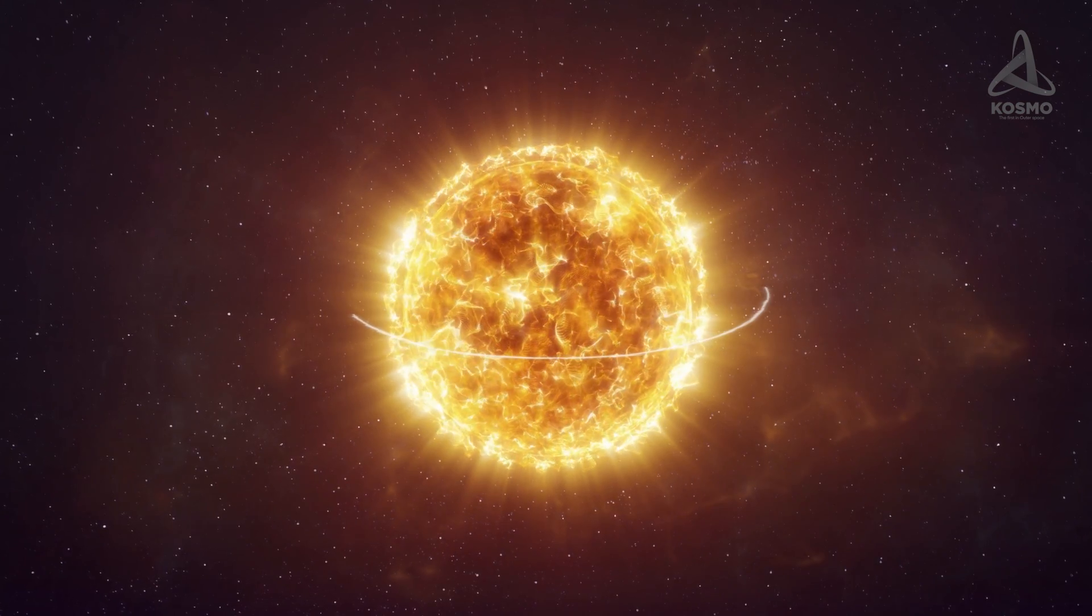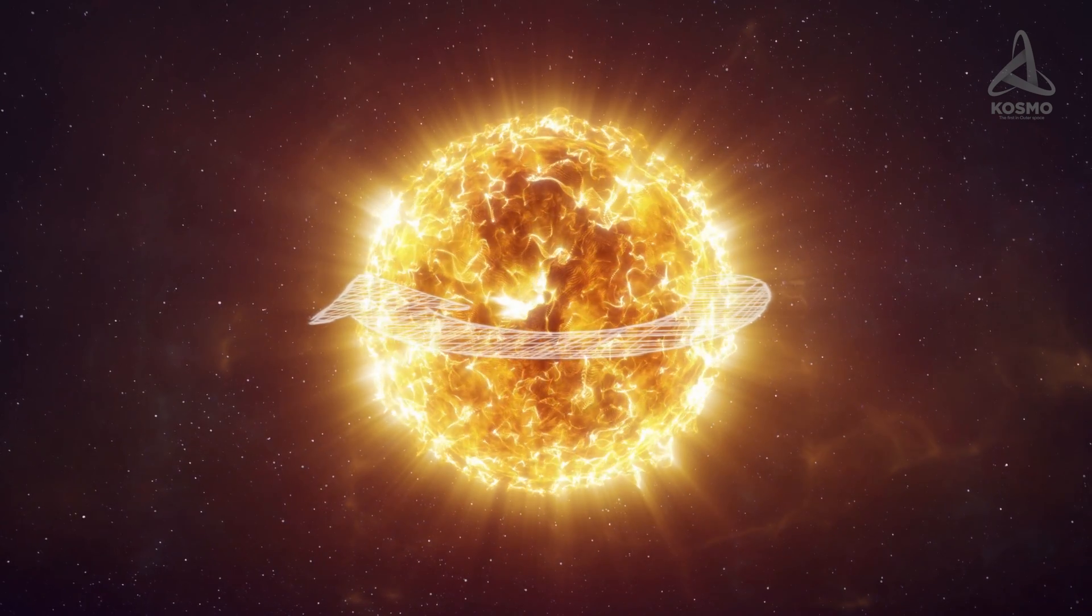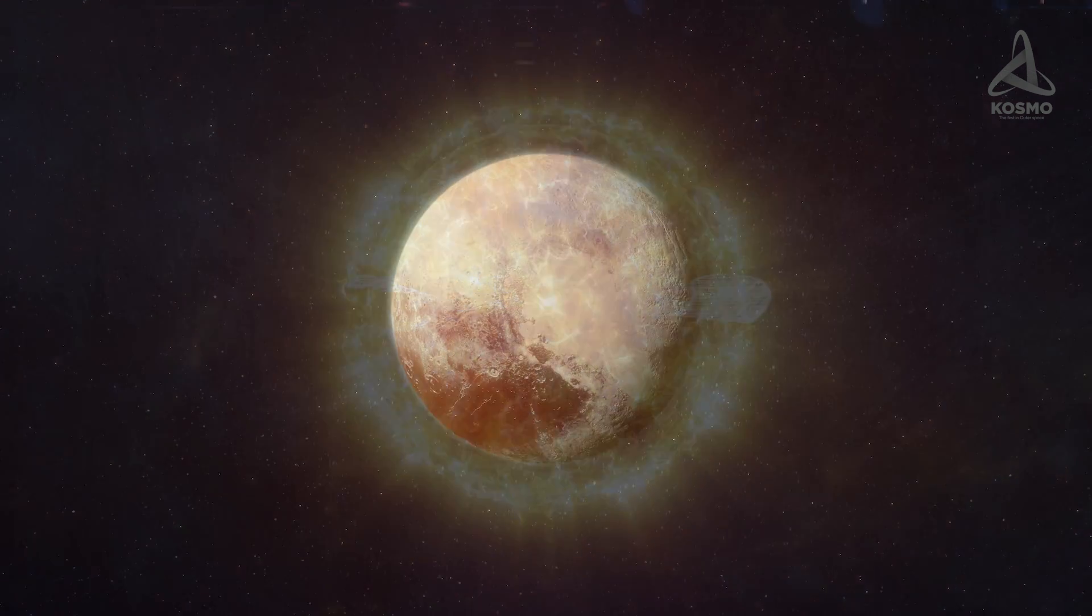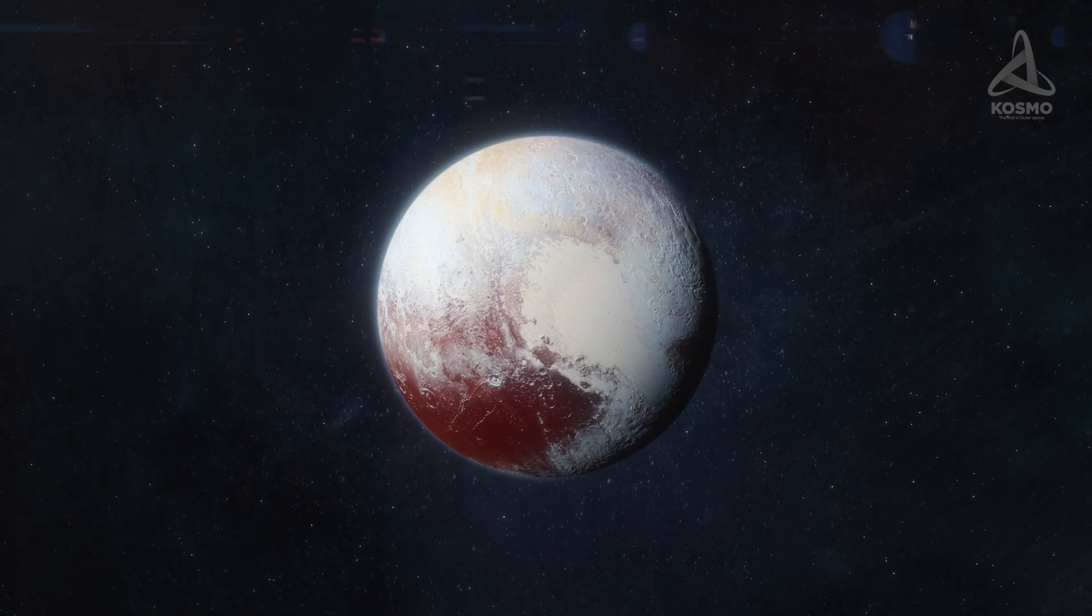Interestingly, it would take light almost 8.5 hours to travel the length of this gigantic star's equator. This is the same time it takes sunlight to reach Pluto at the remotest point of its orbit.